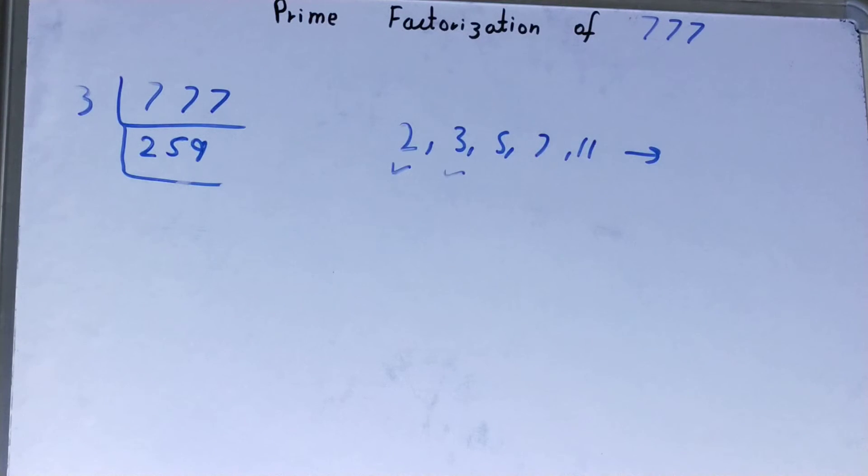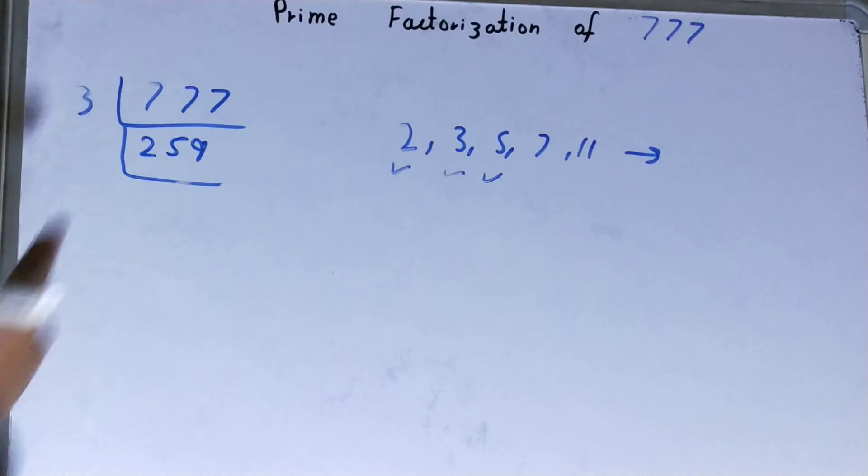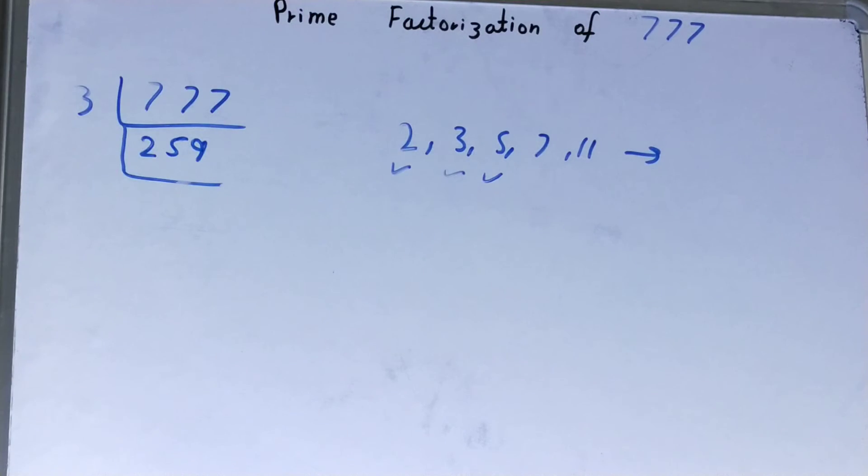Next, we'll check whether this 259 is divisible by 3 or not. It is not divisible, so we'll go to the next prime number, that is 5. Is it divisible by 5? We can clearly say it is not divisible because the last digit should be 0 or 5 for being divisible by 5.